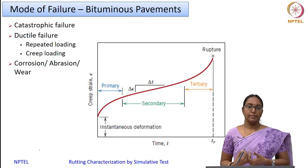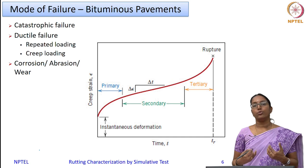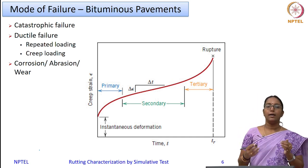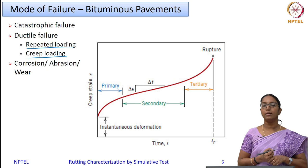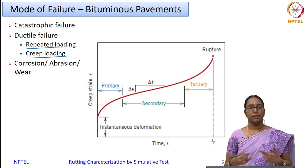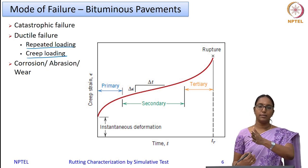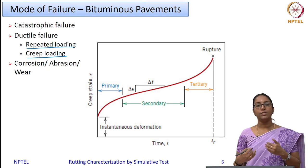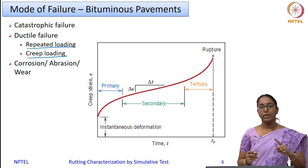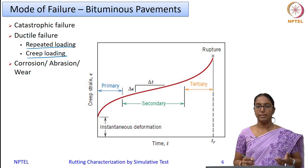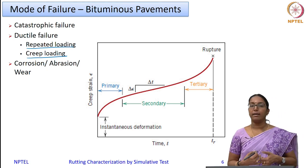What type of failure is rutting? In a bituminous pavement you can have catastrophic failures which happen all of a sudden, and there could be ductile failures. Rutting is a ductile form of failure under repeated loading as well as creep loading. Repeated loading refers to a number of trucks passing — each causing a repeated application of load — whereas a stationary truck applies a creep or stationary loading. A repeated application of such loads or creep load can cause ductile failure. There could also be other forms of failure like corrosion, abrasion, and wear.